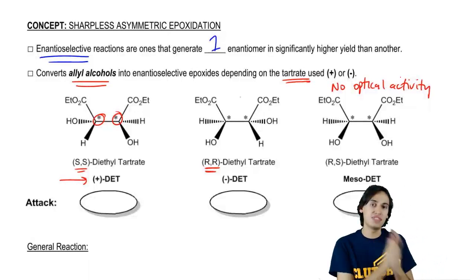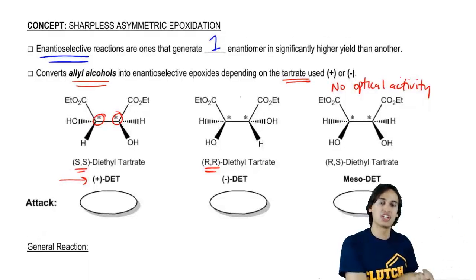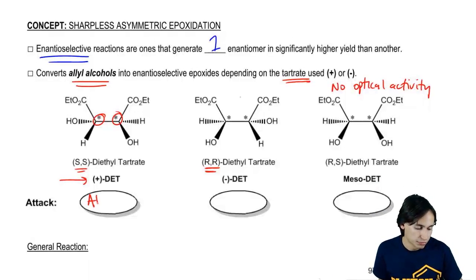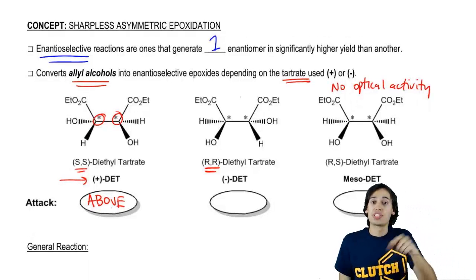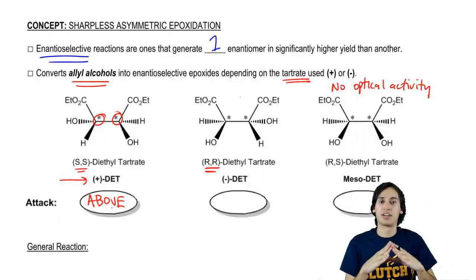So it turns out that the positive DET, the positive tartrate, the one that has the positive rotation of light, is going to attack from above. It's going to enantioselectively pick the top part of a double bond to add an epoxide.